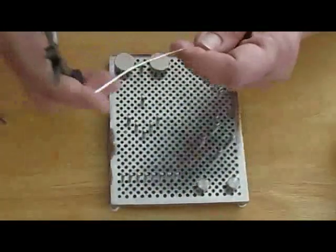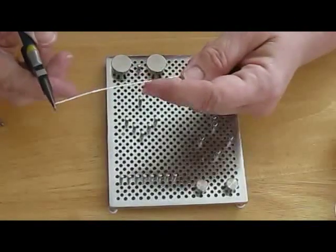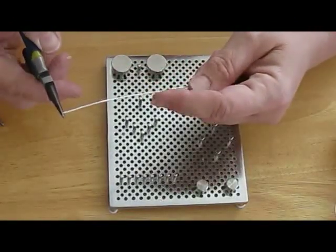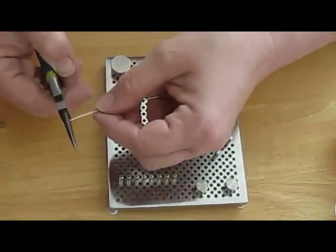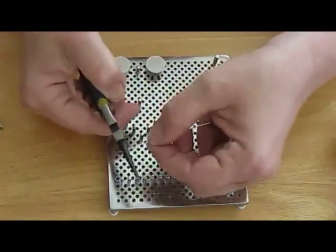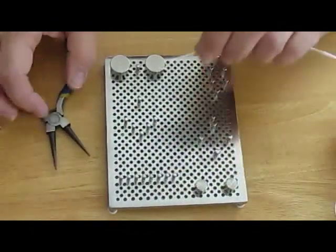Unlike if you're working with needle nose pliers to make loops, maybe you'll grab it at this point and it'll be a small loop, or you grab it down here and it'll be a big loop. When you're working with a wire jig, you get consistency.